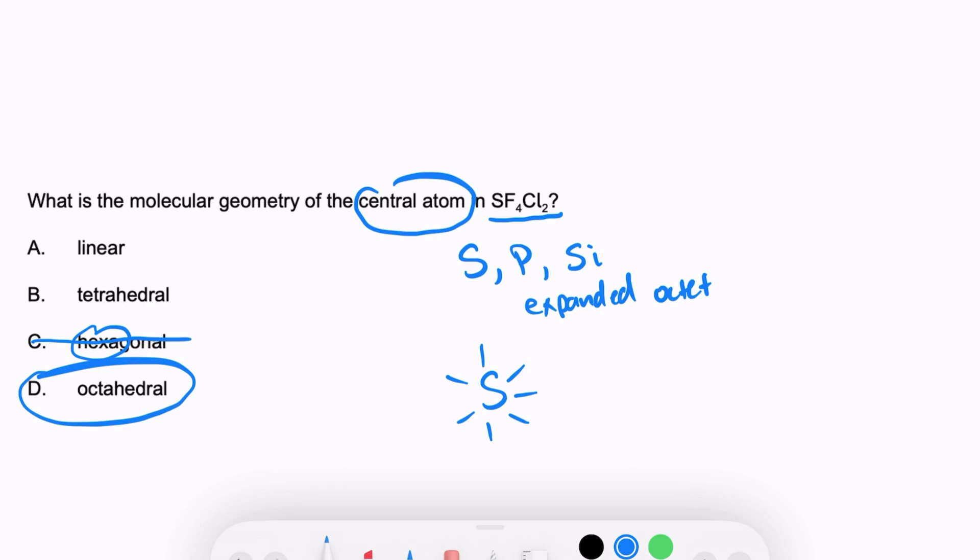Make sure that you remember your shapes, your molecular geometry. Of course, it's not linear, it's not tetrahedral - that would be something with four bonds. So the correct answer is octahedral.